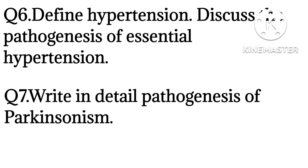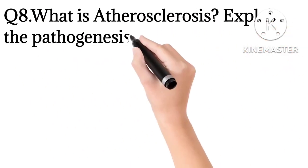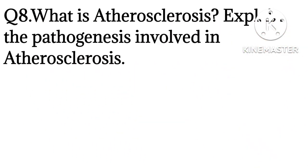The seventh question is: write in detail the pathogenesis of Parkinsonism. As mentioned, either Parkinson's, epilepsy, or Alzheimer's — one is fixed for the 10-mark question. In five marks, they will ask schizophrenia, which will be discussed in the five-marks session. The eighth question is: what is atherosclerosis? Explain the pathogenesis involved in atherosclerosis — this is also very important.